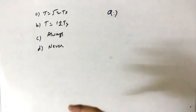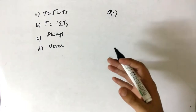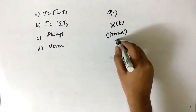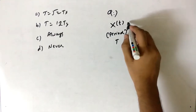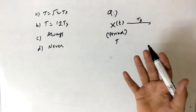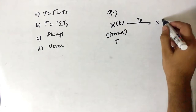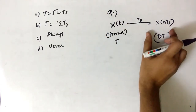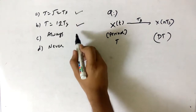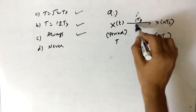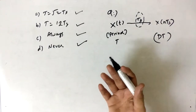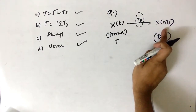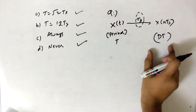The last question: suppose we have a continuous-time signal x(t) that is periodic with fundamental period T. If we sample it uniformly with sampling period Ts, we get a discrete-time signal x(nTs). The question asks: in which of the following cases is the sampled signal x(nTs) periodic? The options are specific values or conditions on the ratio T/Ts.